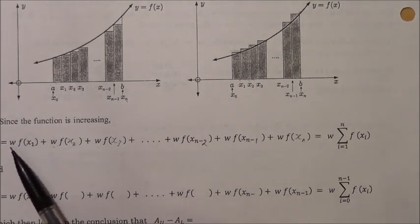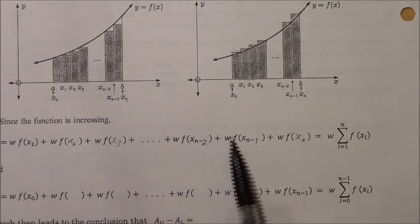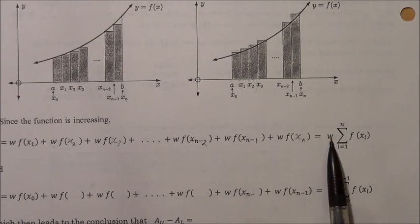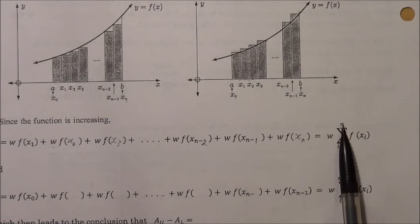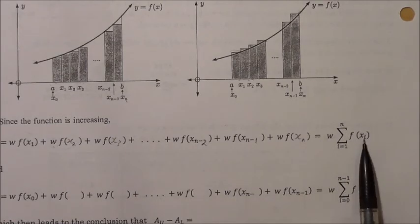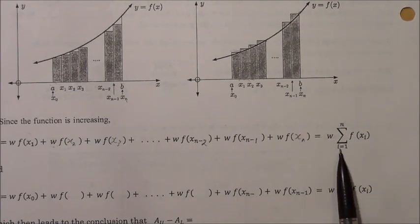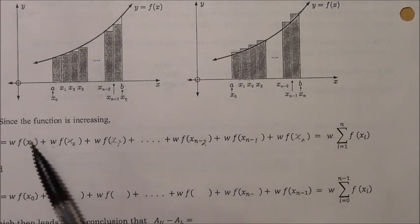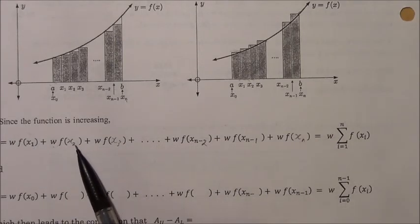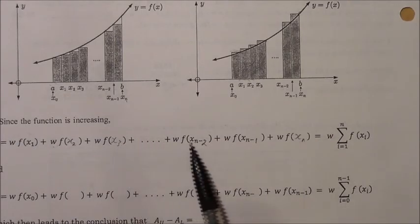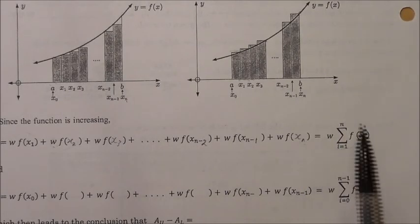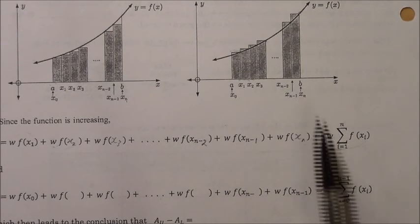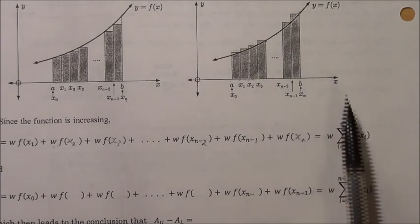If I factor w out of all of these terms to the front, what's left over is the sum of f(xᵢ) where i goes from 1 to n — that is, from 1 up to 2, 3, all the way up to n. This represents the sum of all the upper rectangles.